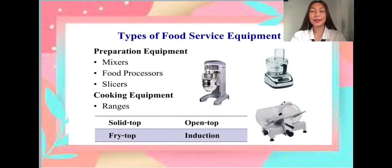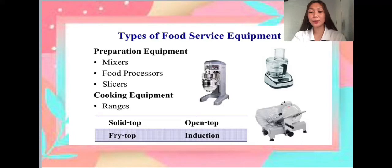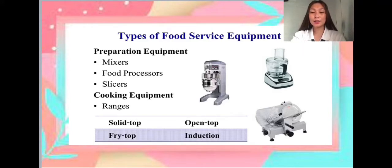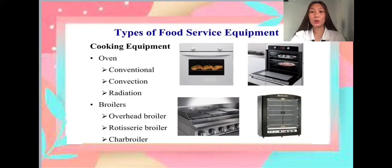Cooking equipment — first is ranges. On the solid top, we have the fry top. Fry top is a smooth or ribbed plate for cooking at high temperature that has a continuous surface. On the open top, we have induction. Induction refers to the generation of heat through the use of magnetism.